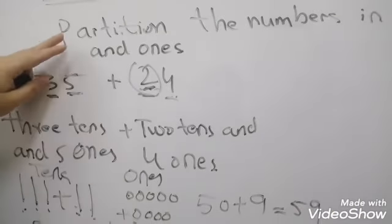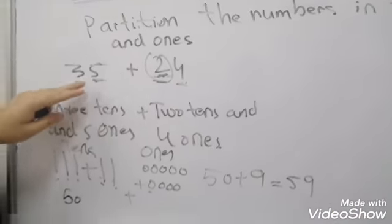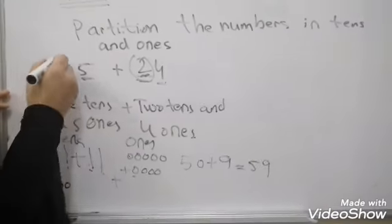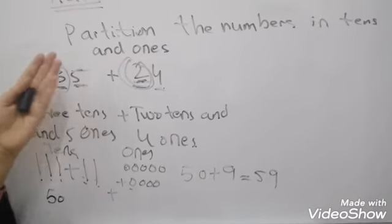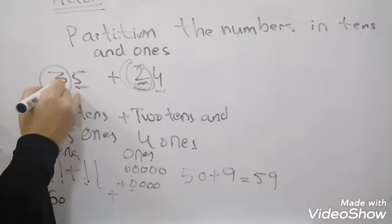So you just need to partition the numbers into tens and ones. 35, first see the tens. Left hand will be the tens and the right hand will be the ones. This is tens.